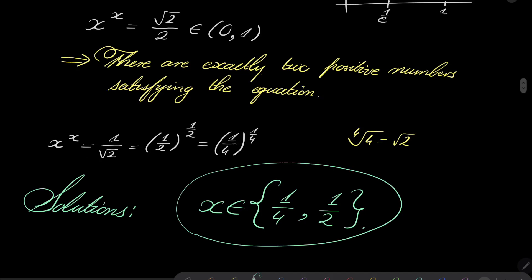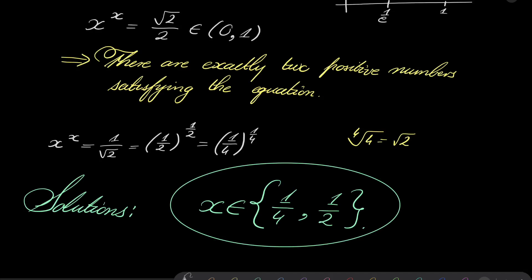So our equation has at most two solutions and we have found them both: x equals 1 fourth and x equals 1 half. That closes our problem. Thank you very much for watching and I will see you next time. Goodbye.